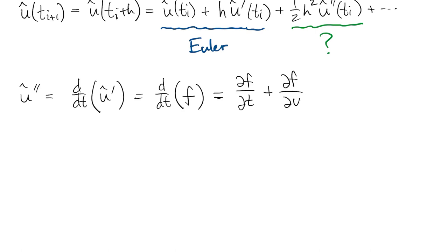f depends directly on two things, t and u, so we have to use the multidimensional chain rule to write out the total derivative of f. Using subscripts for the partial derivatives of f, we can also put in the fact again that du-dt is equal to f when we evaluate at u equal to u-hat.